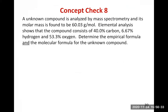Now let's go through a concept check. An unknown compound is analyzed by mass spectrometry and its molar mass is found to be 60.03 grams per mole. Elemental analysis shows the compound consists of 40% carbon, 6.67% hydrogen, and 53.3% oxygen. Determine the empirical formula and the molecular formula for the unknown compound.